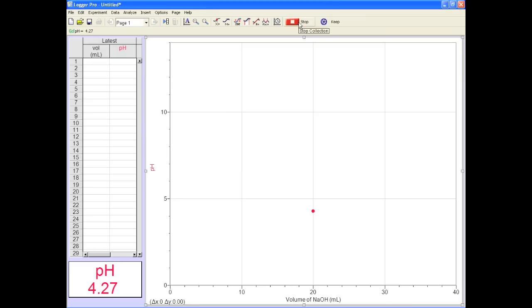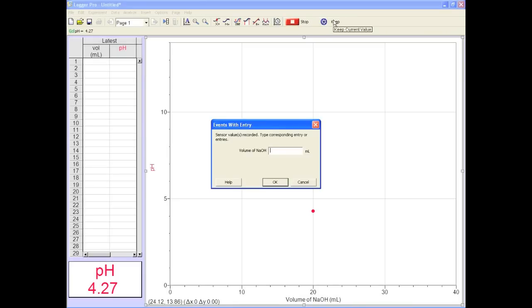Press collect and notice the keep button is now lit up. Press it and enter the amount of titrant you've added to your sample. 0.00.